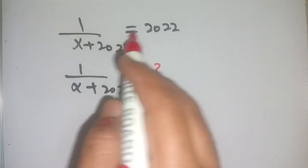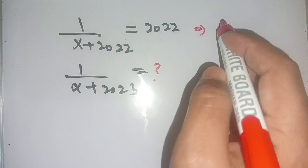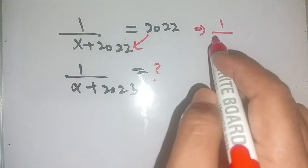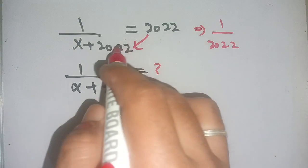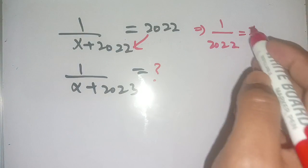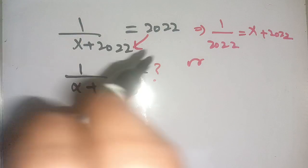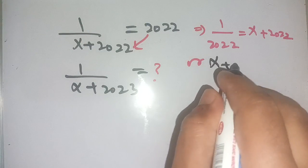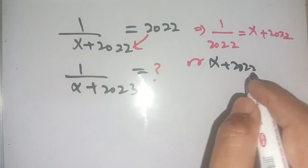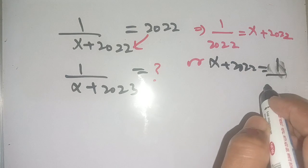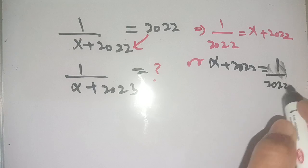Let us solve this. We can rewrite it as 1 divided by, in place of x plus 2022 we place 2022, and in place of 2022 we place x plus 2022. Or we can rewrite it as x plus 2022 is equal to 1 divided by 2022.